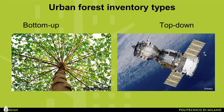A top-down tree canopy analysis uses aerial or satellite imagery to acquire a landscape view, which can be faster and less expensive but offers limited information on an individual tree basis.